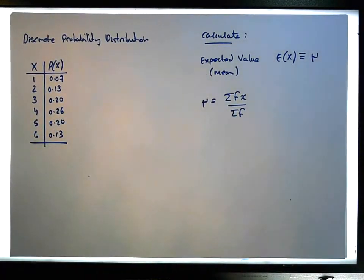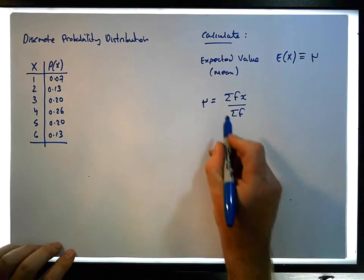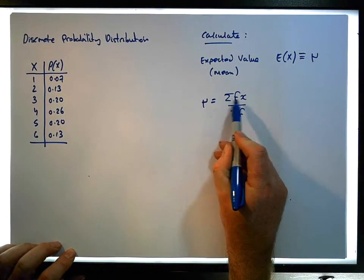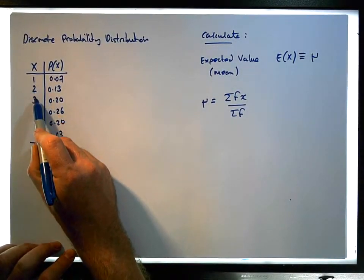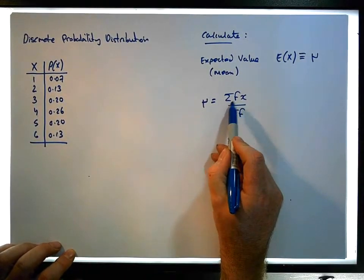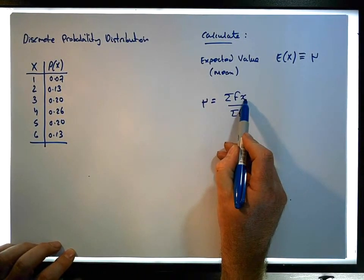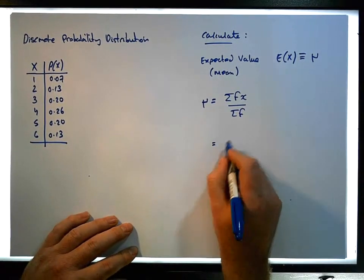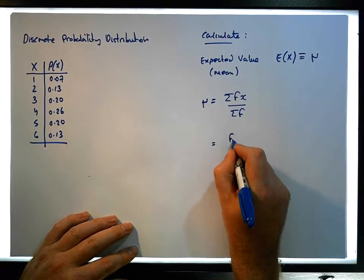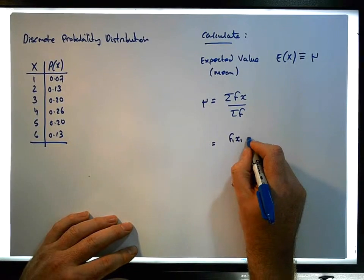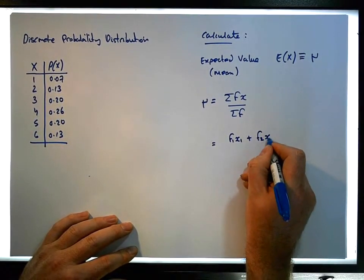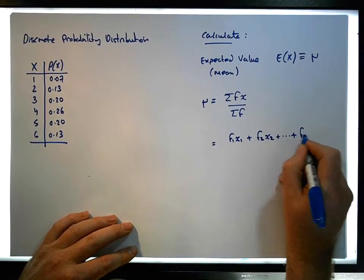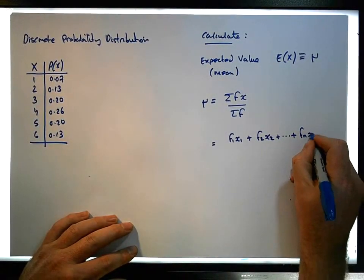We can expand this formula. This summation is done across each one of the observations — it's the product of the frequencies times the x's. We can expand this out to be the first frequency times the first x, plus the second frequency times the second x, all the way to the nth frequency times the nth x.